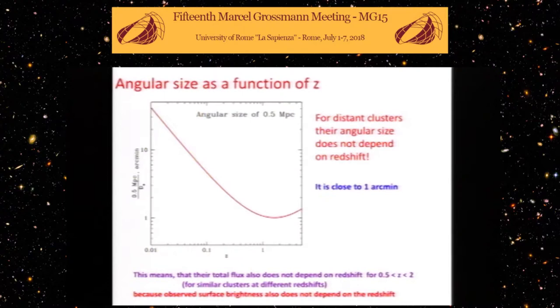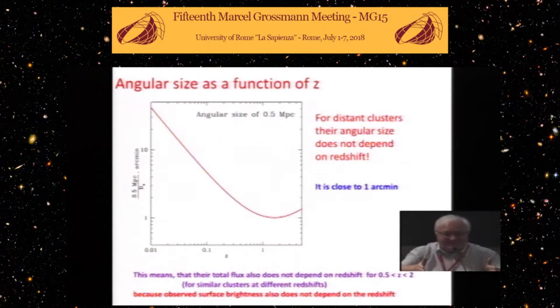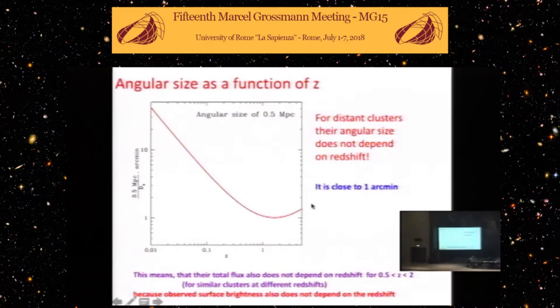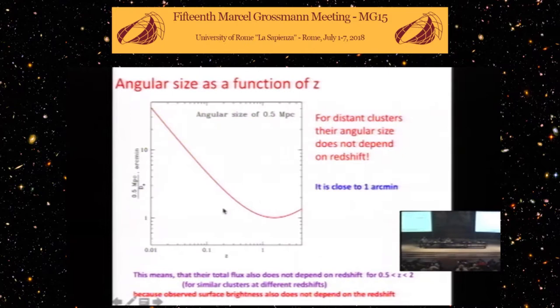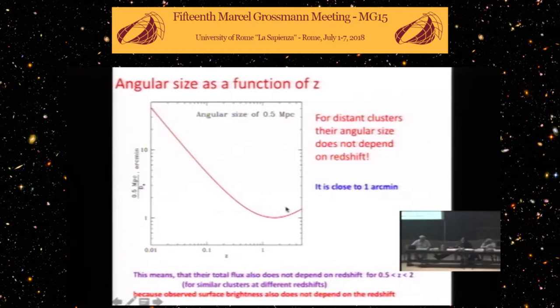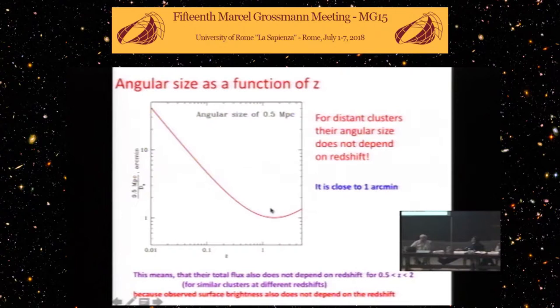Clusters are especially interesting because everybody who is starting to learn cosmology knows that when we have the standard ruler and we go in the universe further and further, in normal geometry this angular dimension of ruler will decrease. But in cosmology, in our cosmology, dimension will be decreasing, decreasing, and then it stops to decrease, and then it will start to increase. These are beautiful effects of cosmology, and every student who is learning it knows this. What is interesting is that clusters of galaxies from redshift 0.2 up to redshift 3, all these clusters have practically the same angular dimension, and it's very close to one arc minute.